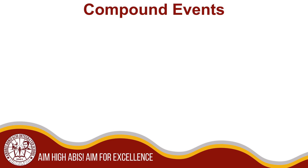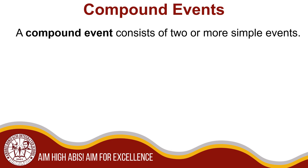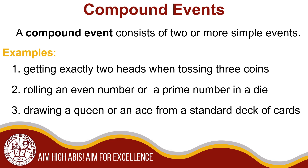There are many examples around you of compound events. Now the question is: what are compound events and how do you find their probability? A compound event consists of 2 or more simple events. Examples: 1) getting exactly 2 heads when tossing 3 coins; 2) rolling an even number or a prime number on a die; 3) drawing a queen or an ace from a standard deck of cards. These are compound events because they consist of 2 or more simple events.